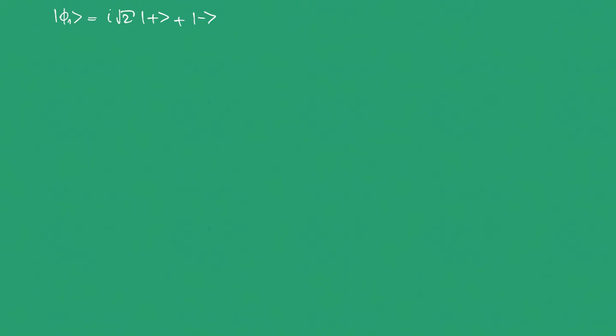However, we need to find the orthonormal quantum state. Up to now we found an orthogonal quantum state, so we need to normalize it. I'll introduce a normalization constant c, giving |φ₁⟩ = c(i√2|+⟩ + |−⟩).